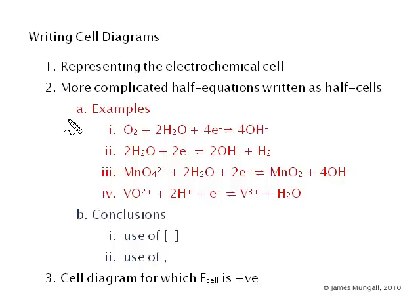And how to write them as half cells. The examples we're going to come across are this oxygen with hydroxide, this water with the hydroxide and hydrogen, then a manganate one and a vanadium one at the end.